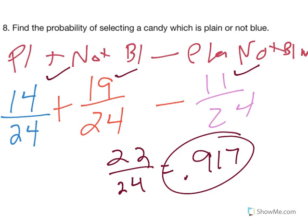And if you think about a plain candy or something that's not blue, there's only 2 candies that fall in that purpose of plain or not blue. Or, I should say that don't fall in that. And that are the blue, not plain ones. And there's only 2 of them. So, that makes sense. So, okay, that's page 148.